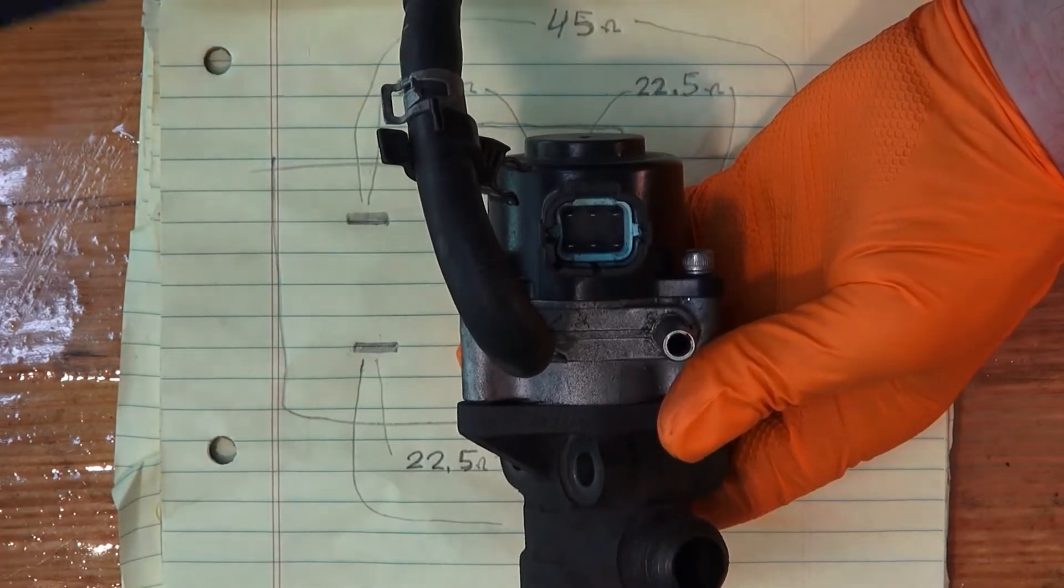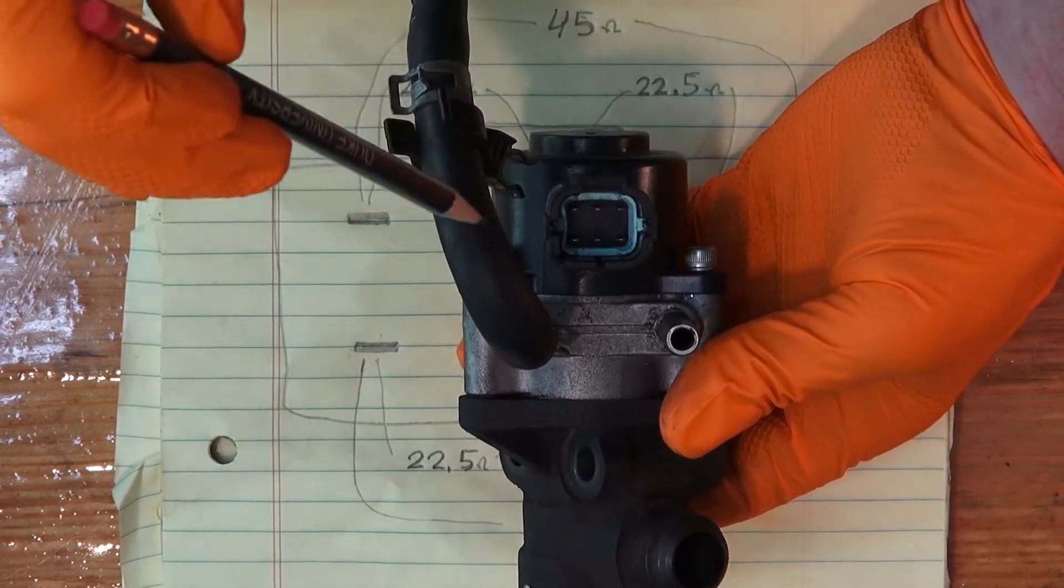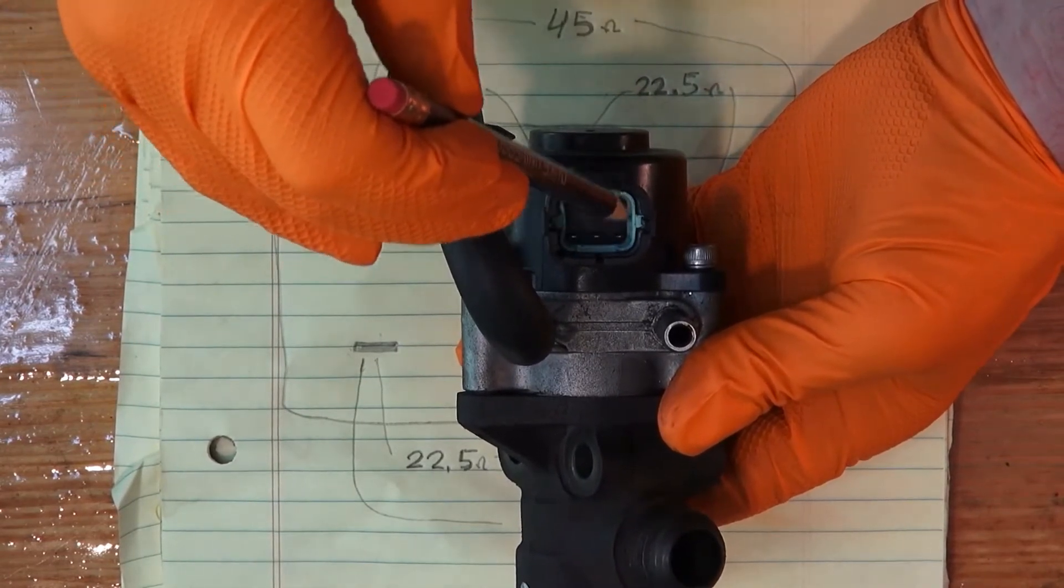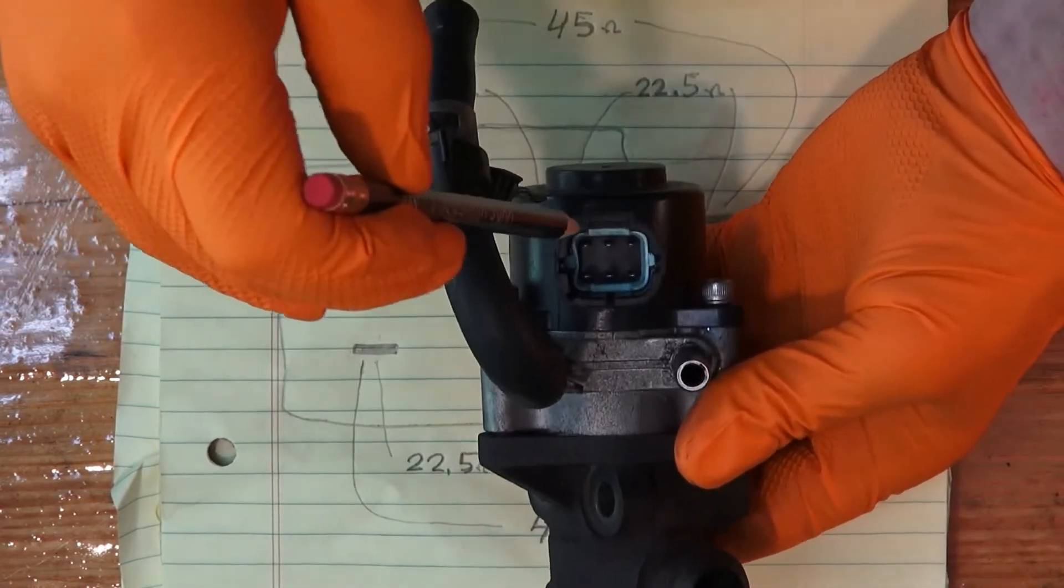The exhaust gas recirculation valve. I measured the continuity between all these pins and I read it on this paper here. You can see there's a keyway at the top.